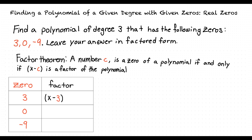Next, using the zero of 0, we find that the corresponding factor is x minus 0, or simply x.